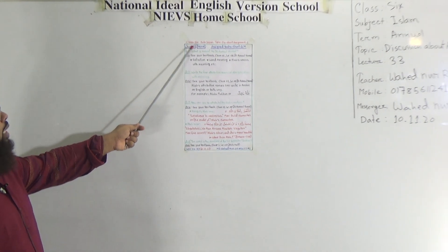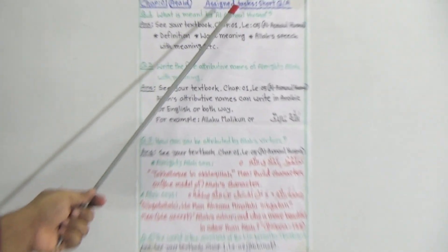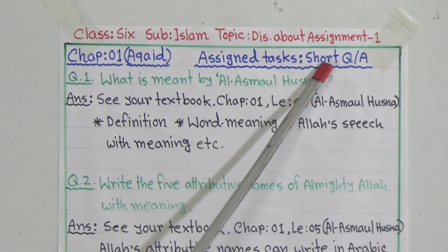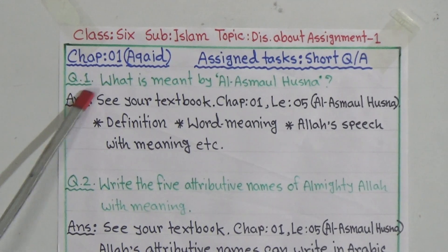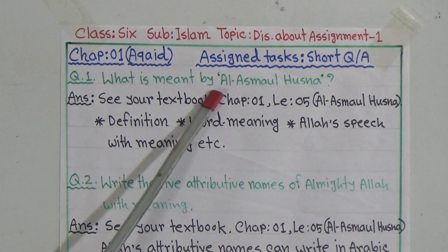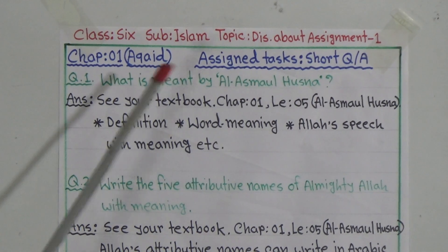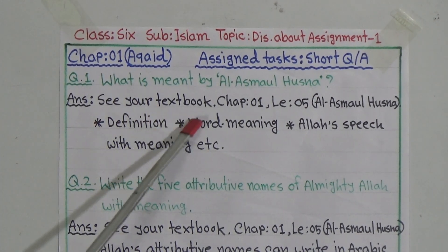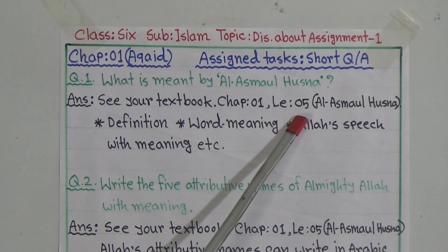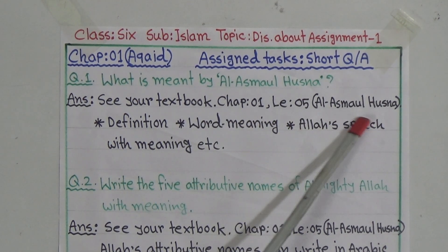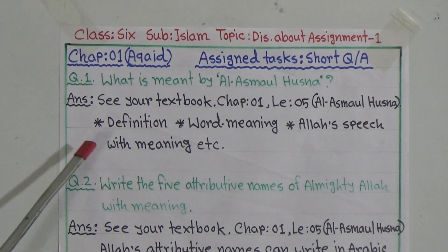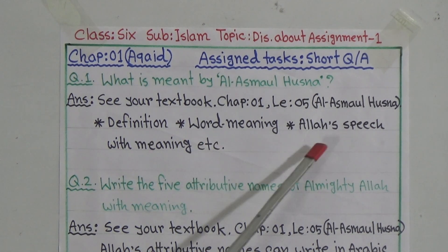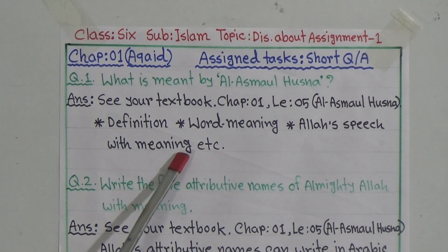The assignment will be from Chapter 1 and the assigned task is short question answer. Question number 1 is: what is meant by Al-Asma-ul-Husna? The answer you will get in your textbook, Chapter 1, Lesson 5, which is related to Al-Asma-ul-Husna. You can write in your assignment the definition of Al-Asma-ul-Husna, the word meaning, and the Al-Asma-ul-Husna with meaning, etc.